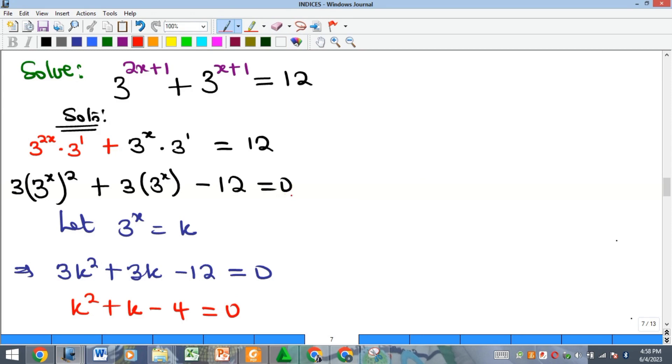And of course you can see factorization cannot work, because if I multiply... meanwhile what is our a there? Our a is 1, our b, which is the coefficient of k, is also 1, and our c, which is the constant, is negative 4. Okay, so now you can see that if I multiply a by c, I'm going to get minus 4.